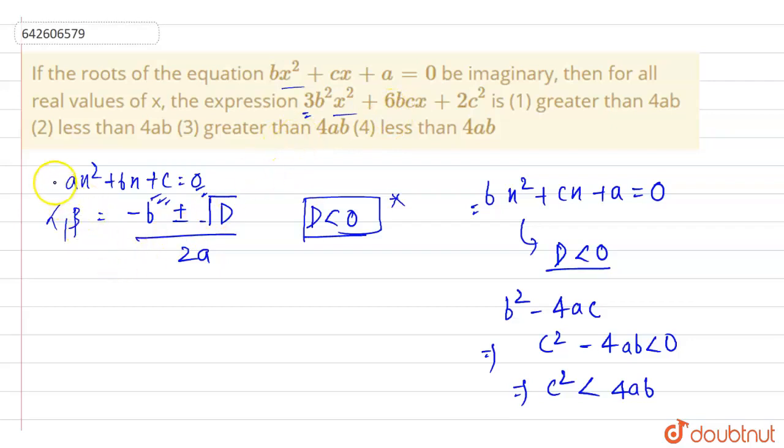So we should know that if an equation is given in this form, minimum value of this equation can be written as minus D by 4a.